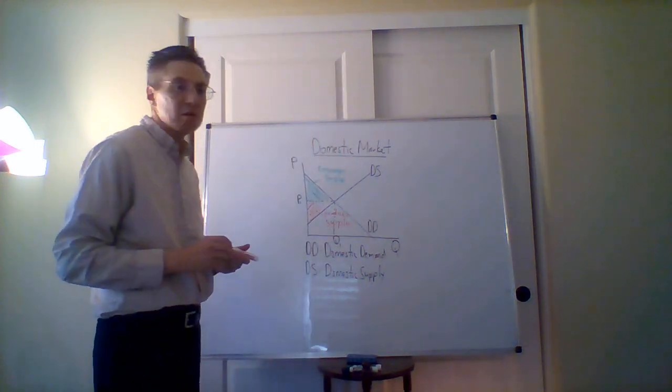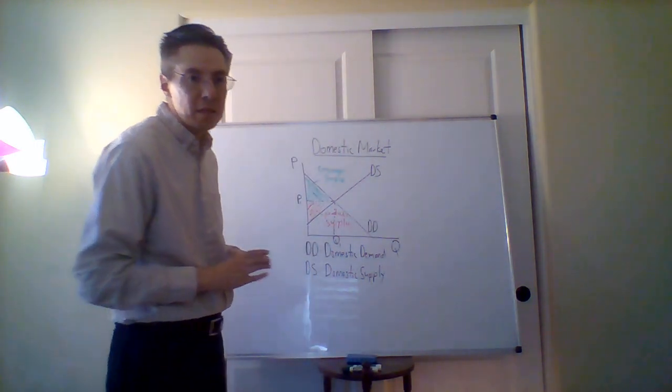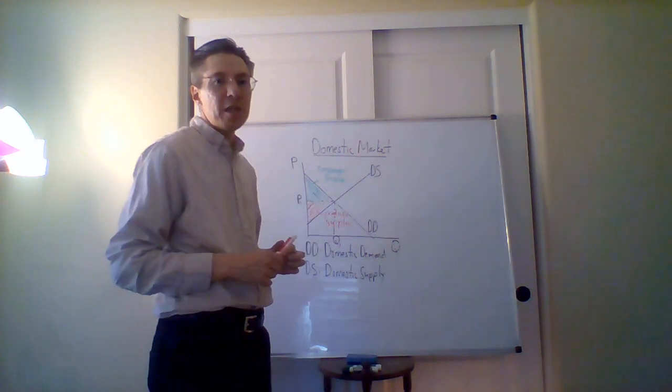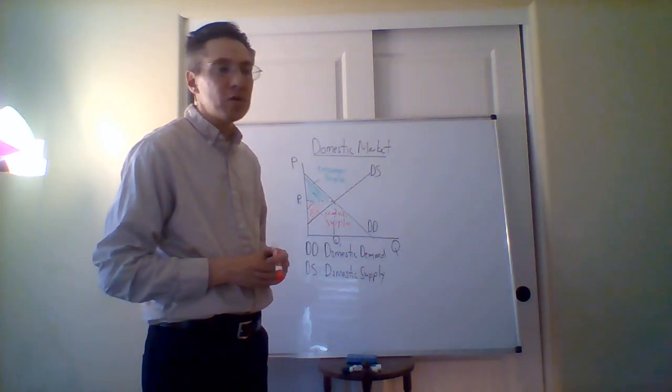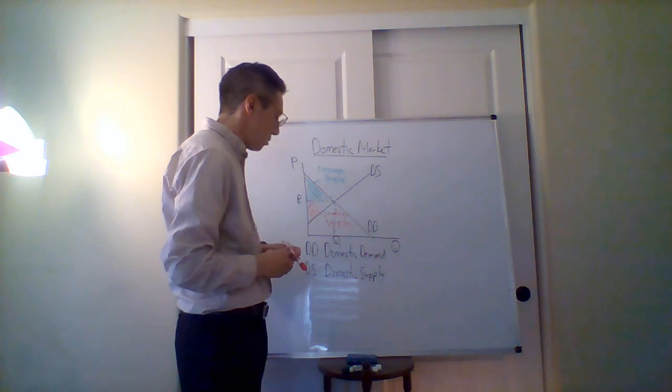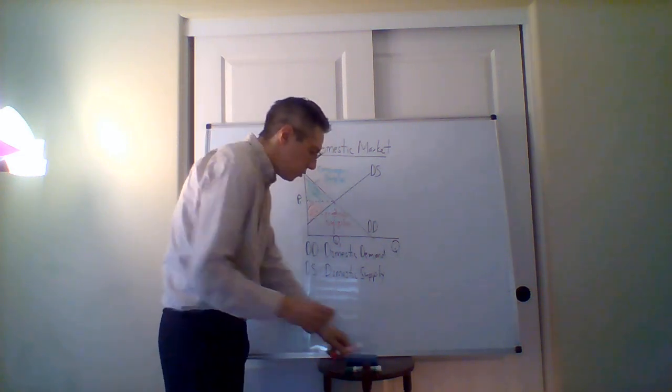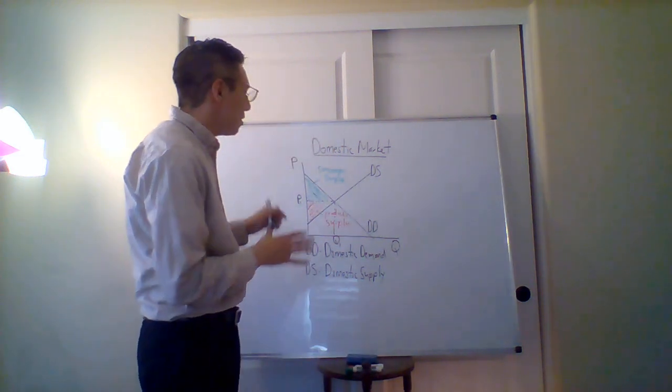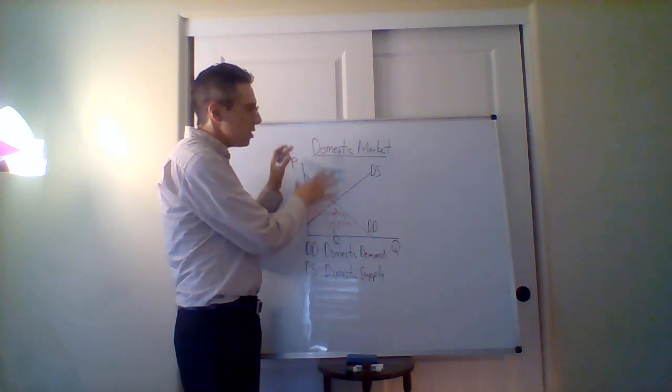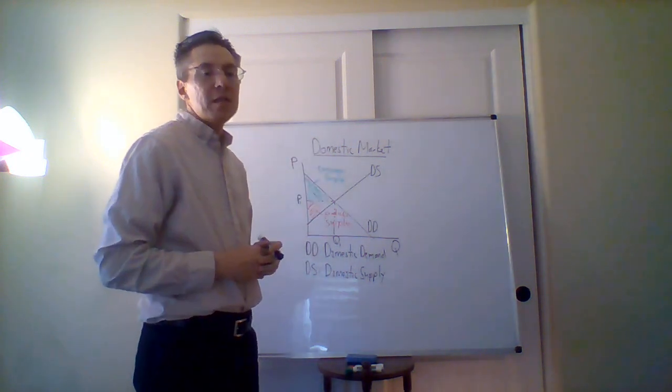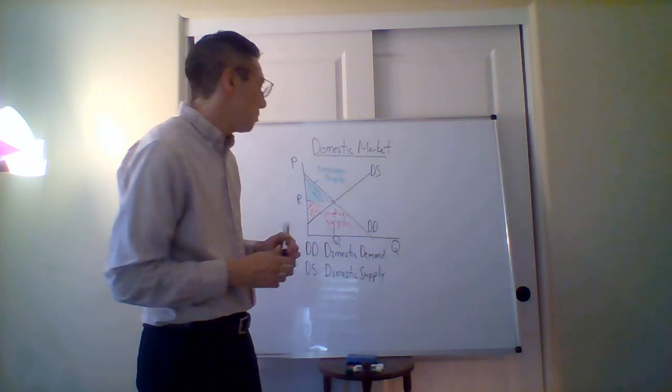Combined, this green area and this red area represent total surplus because there is no government revenue. The main thing to know about this is that this is a domestic market - this is if there is no trade.